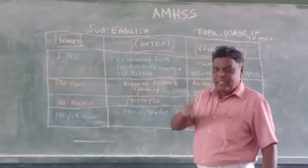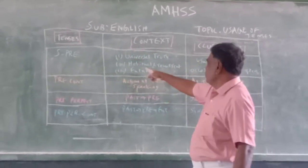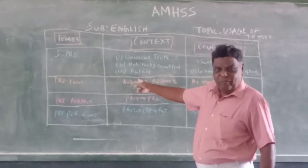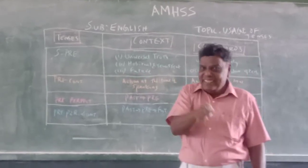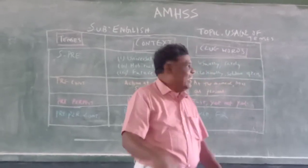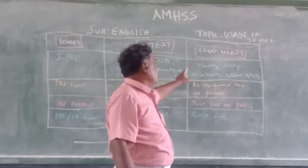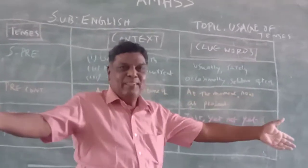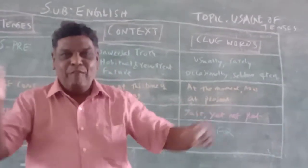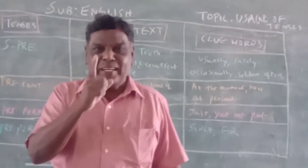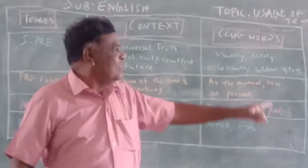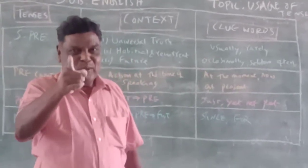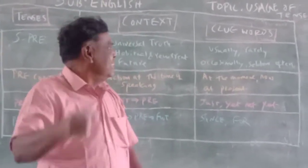So simple present has three contexts: number one, universal truth; number two, habitual action; number three, future reference. And the signal words for simple present are: usually, early, occasionally, seldom, often. Whenever you come across these signal words, you have to use only simple present tense.